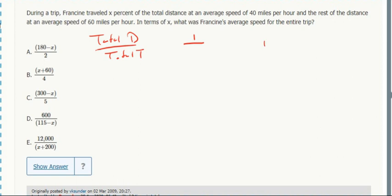So the first part is X over 100, because it's X percent at 40 miles an hour. So X over 100 is the distance, 40 miles an hour for some time, and then what's the remaining distance?